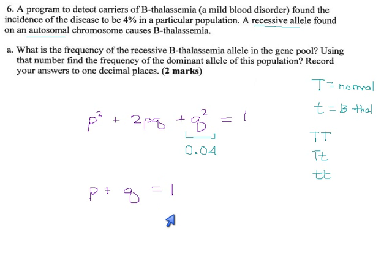Our usual workflow is we start with Q squared, we jump down to Q, then we jump over to P, and after that we come up to the Hardy-Weinberg formula to find whatever answer they've asked for.